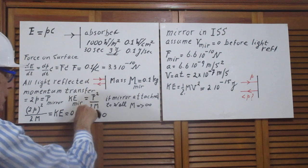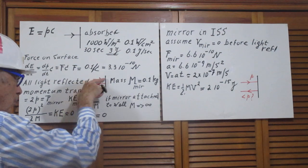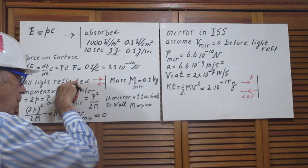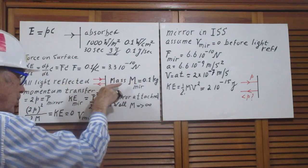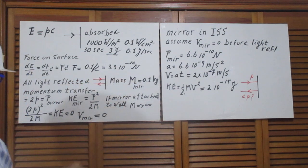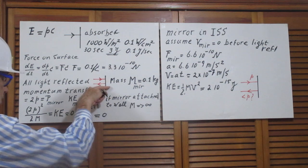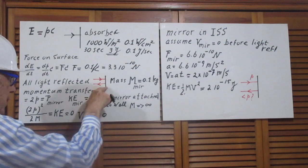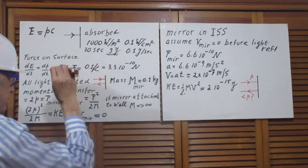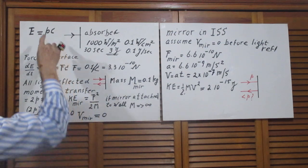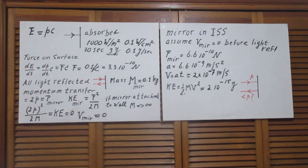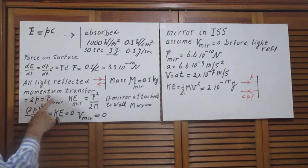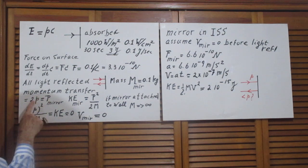P comes in, so the momentum before is P. Momentum afterwards after the collision must also be P. This is minus P, so there is an increase of momentum of the mirror of 2P, two times this little p. I call that capital P of the mirror, so capital P of the mirror after the collision is 2P.